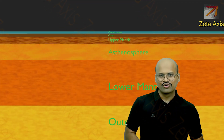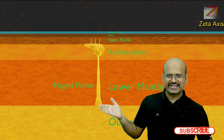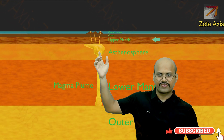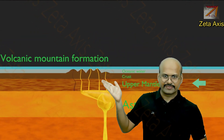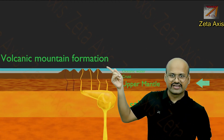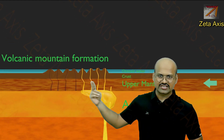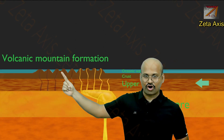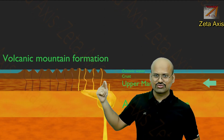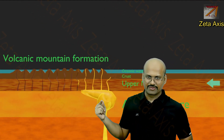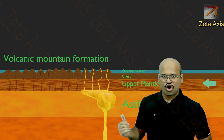Now let's try to understand how these hotspots create volcanic mountain chains. Magma from the lower mantle rises up and collects in the asthenosphere, forming a plume. This magma is denser than the continental plate, so it will not rise up directly, but some magma through the pores will rise up to the surface and create these mountains. As the continental plate moves, a chain of mountains is created. All of them are volcanic in nature, and as soon as these mountains move away from this mantle plume, they become inactive.